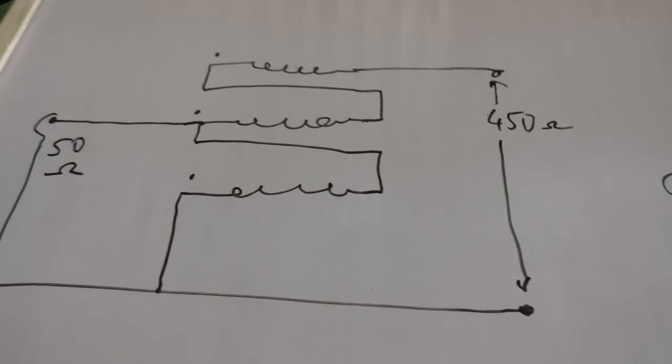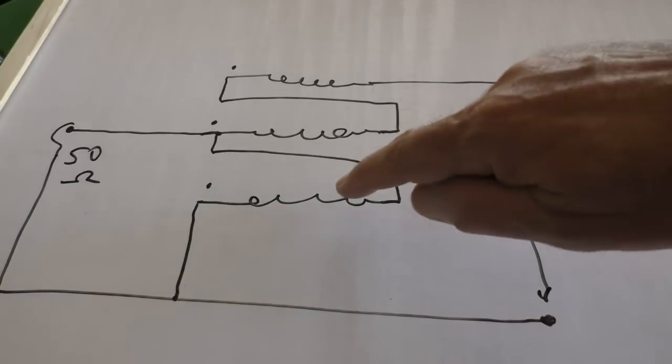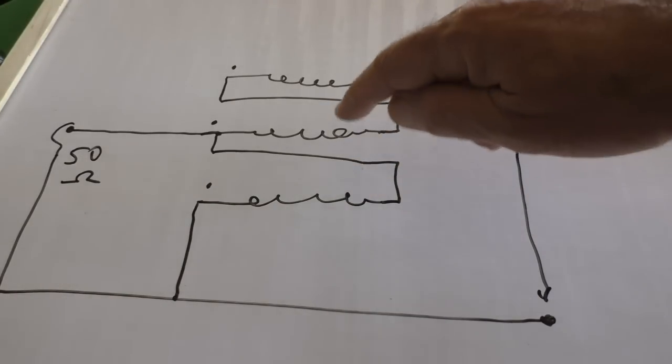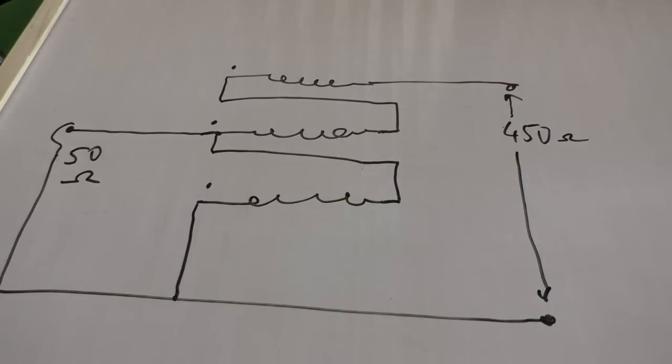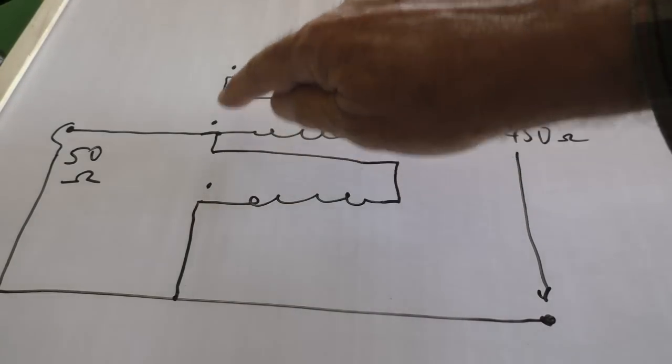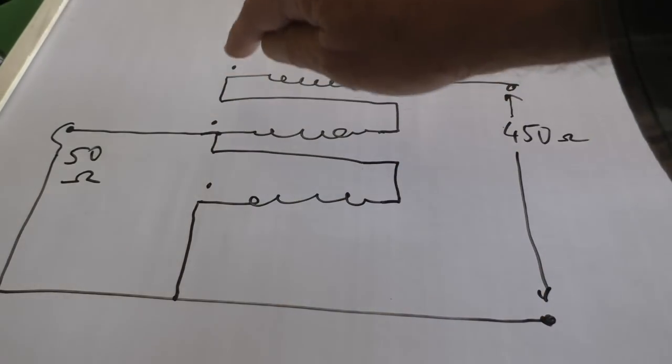And each one of those windings, each one of these windings is 10 turns. I got this out of a book somewhere or off the net, I can't remember where now. I did it some time ago. And the dots tell us where the ends of the windings are.